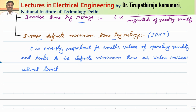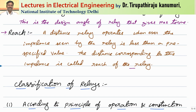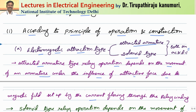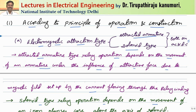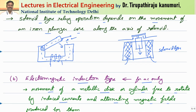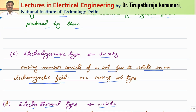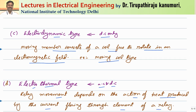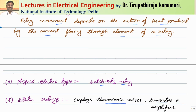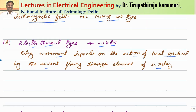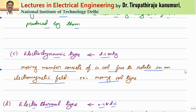I hope the different types of relays are clear to you. In the next class, we are going to start with electromagnetic attraction type relays, and then proceed one by one — electromagnetic induction type, electro-dynamic type, electro-thermal type, and physico-electric type. If you still have any queries, you can leave your comments in the comment section below. Thank you very much.